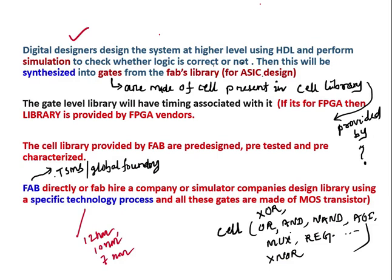When digital designers design a system — for example, an ASIC — they first design the system at a higher level using a hardware description language, either VHDL or Verilog. Then they perform simulation to verify whether the logic is correct or not. This is software-level verification. Then the design is synthesized into gates.